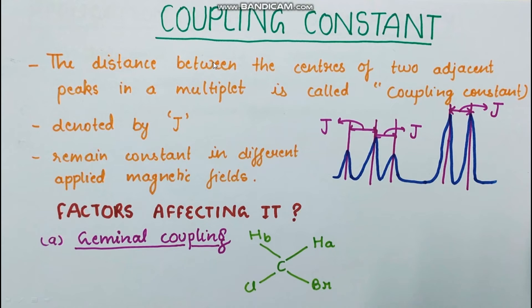Next: what is coupling constant? The distance between the centers of two adjacent peaks in a multiplet is called the coupling constant, denoted by J. It remains constant regardless of the applied magnetic field. This distinguishes it from chemical shift, which changes when the magnetic field is changed. If the separation between peaks changes on changing the applied field, they represent different signals from different compounds. If the separation does not change, the peaks belong to the same multiplet.